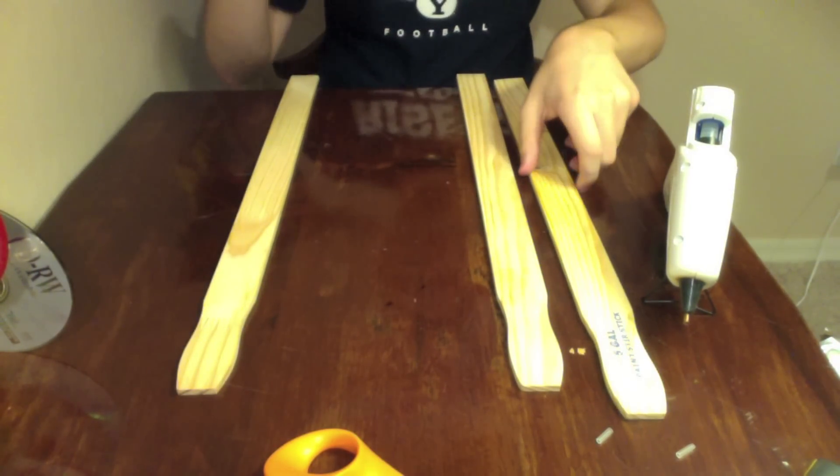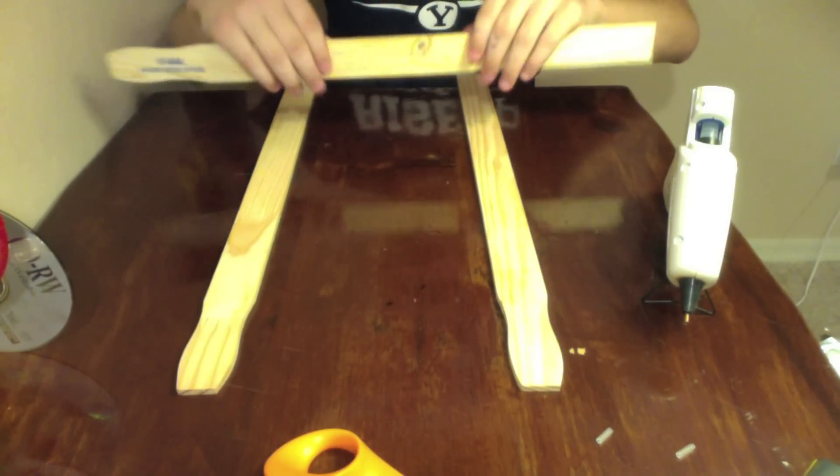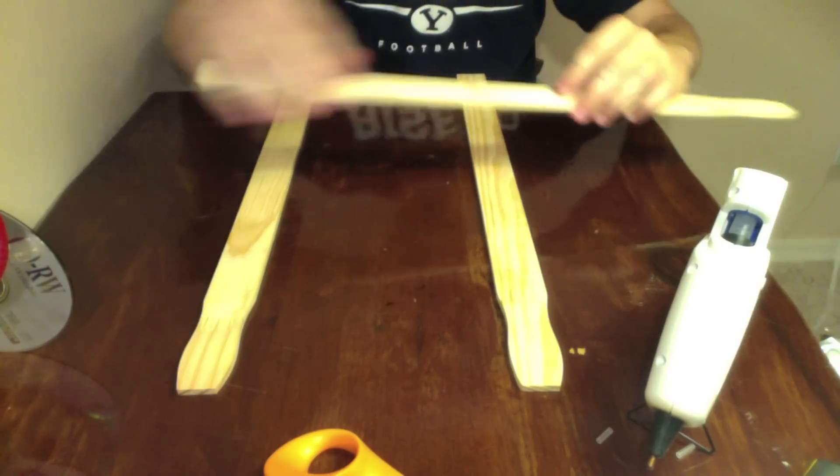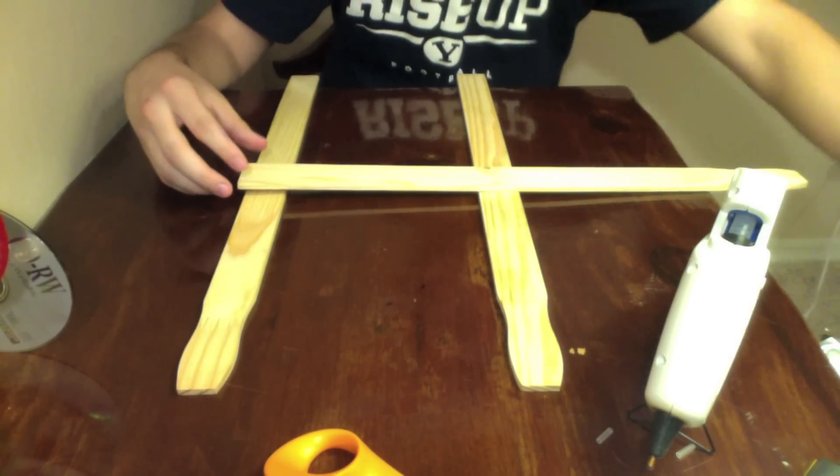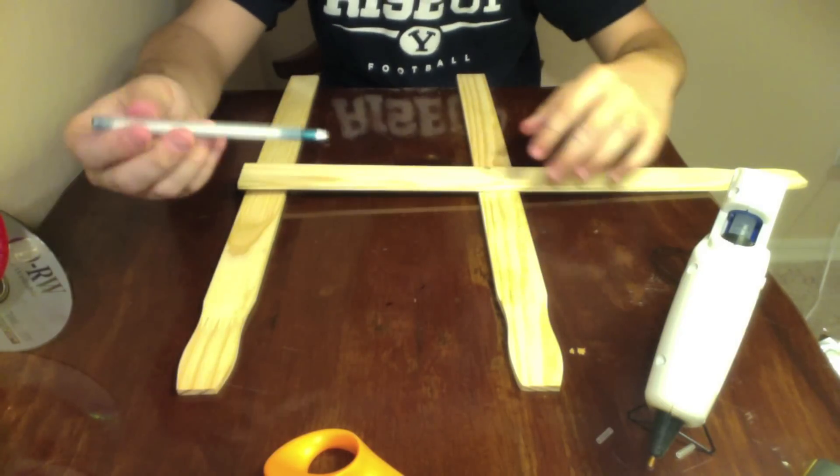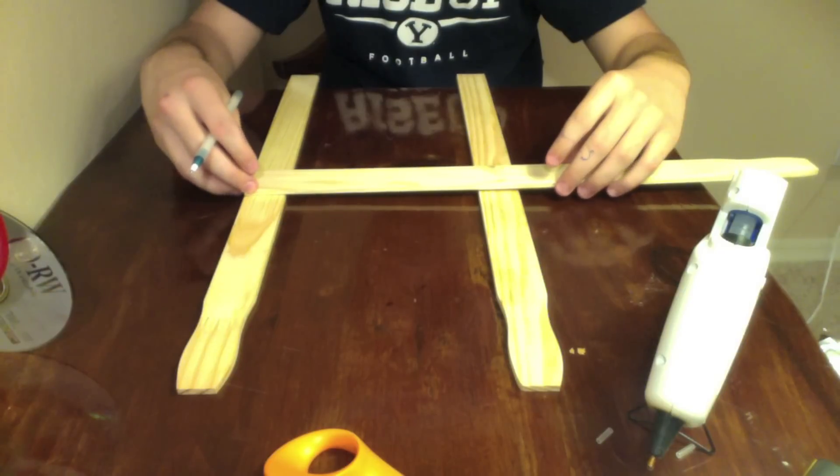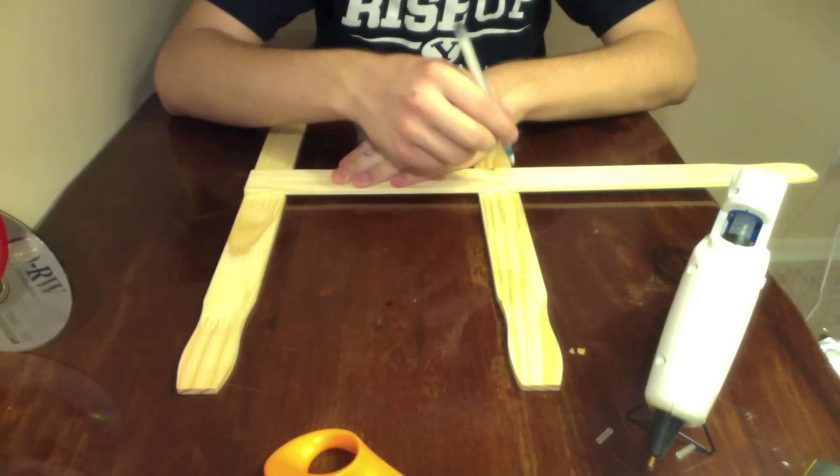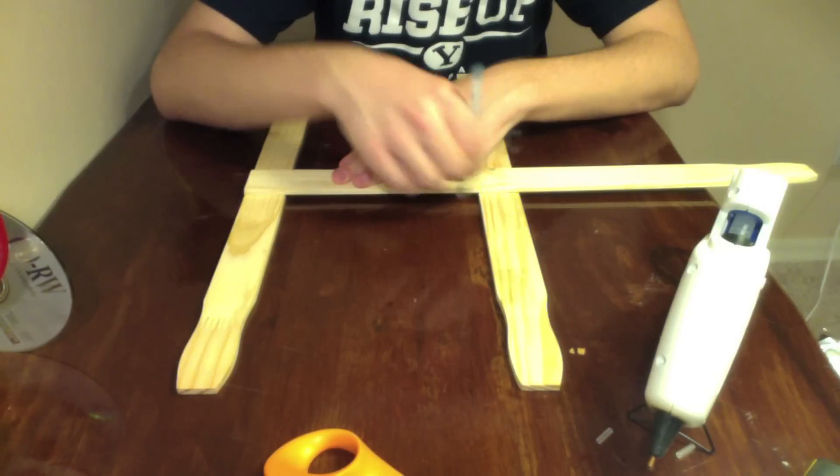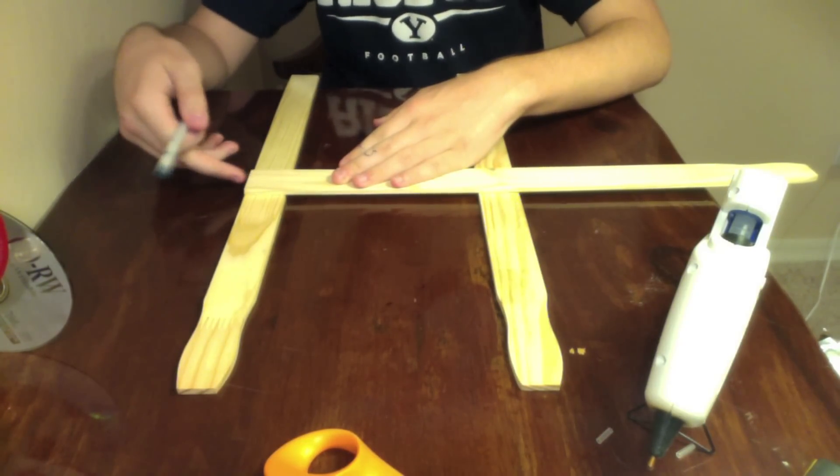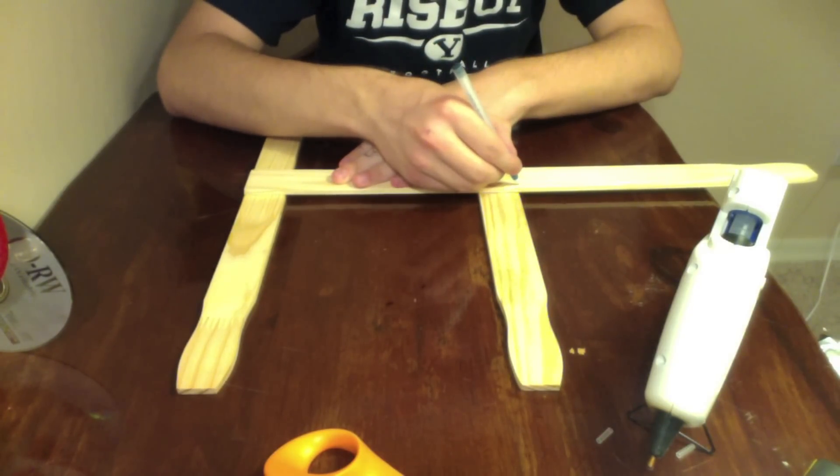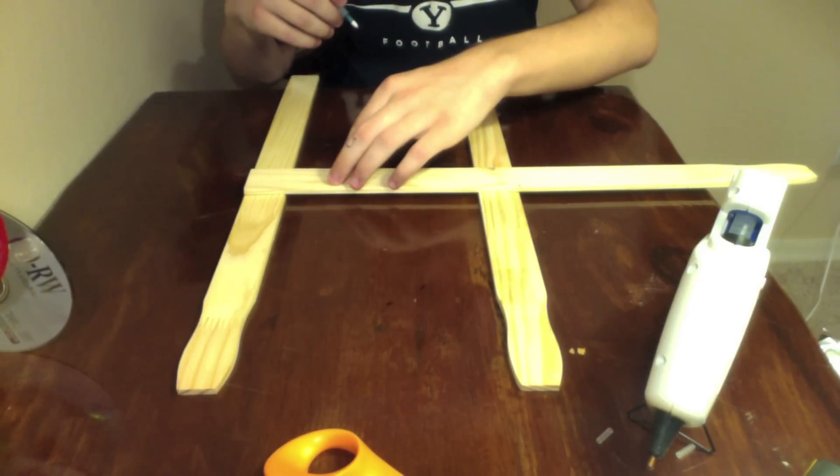Now, what you want to do is take your third stick and get a pen or a pencil or whatever and measure out at the center where you're going to place this. So this goes right here. Just draw these lines. And it's lined up right here. And then you're going to want to cut this third stick in half. So mark where you want to cut right here. So we've got that.